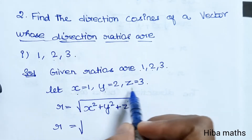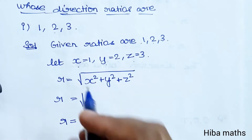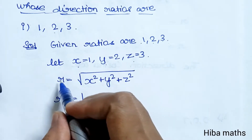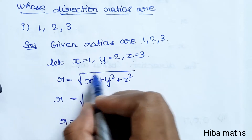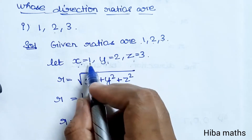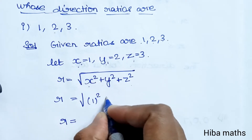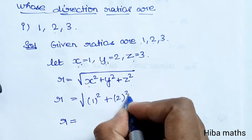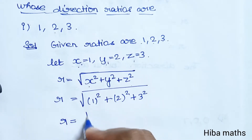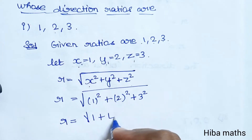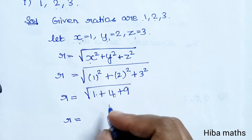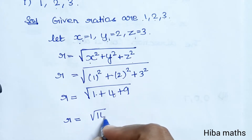Here L, M, N correspond to X, Y, Z respectively. We find R, which is equal to the root of X square plus Y square plus Z square. So R equals root of 1 square plus 2 square plus 3 square, which is root of 1 plus 4 plus 9, that is root of 14.